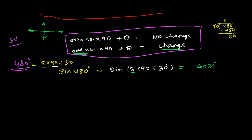Now we need to confirm whether the sign is plus or minus. Draw the quadrant: one complete round covers 4×90s. We've covered 4×90s (360°), and at the 5th 90 plus 30° extra, we are in the second quadrant. In the second quadrant, the value of sine is always positive. So the answer is +cos(30°) = √3/2. How simple is that!